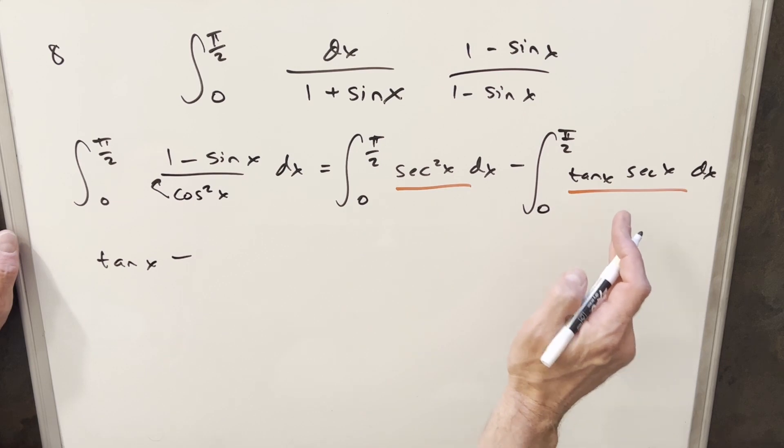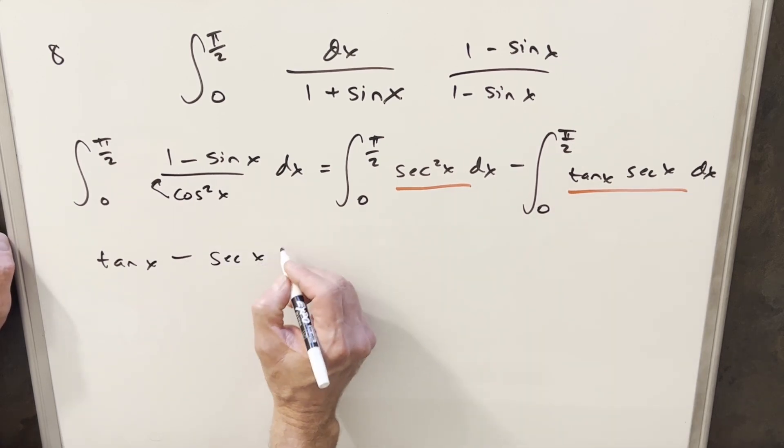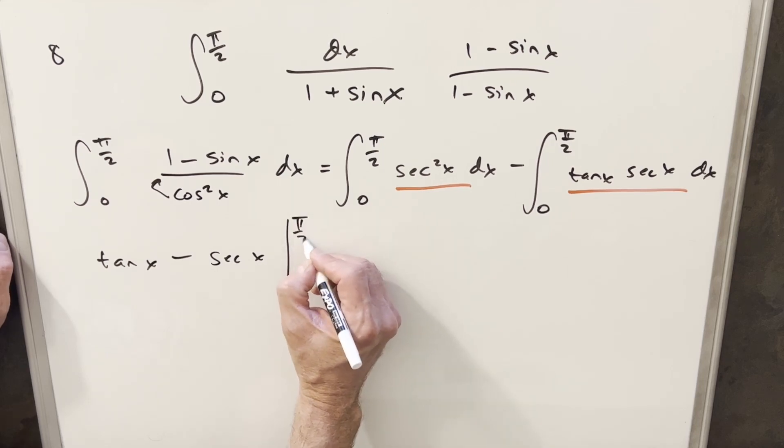And then bring the minus integral of tan x secant x. This is going to be the same thing as secant x. And we just need to evaluate it from 0 to pi over 2.